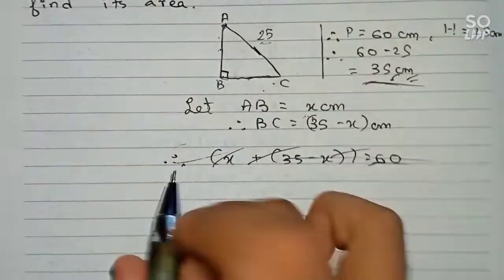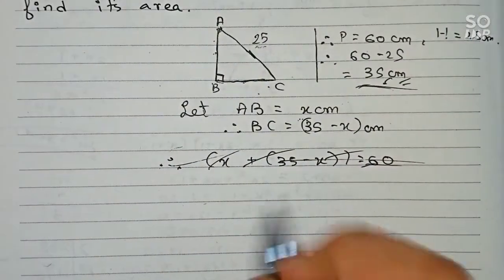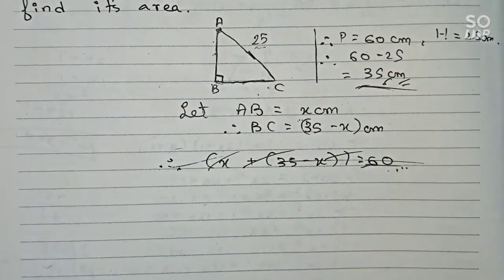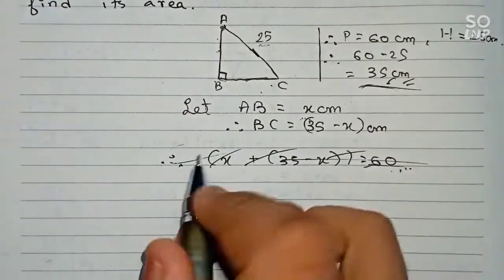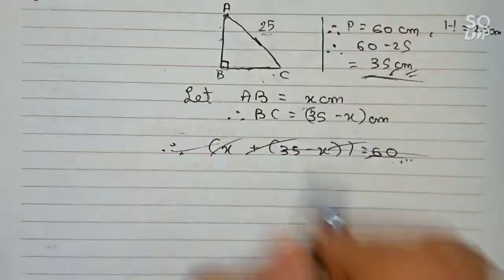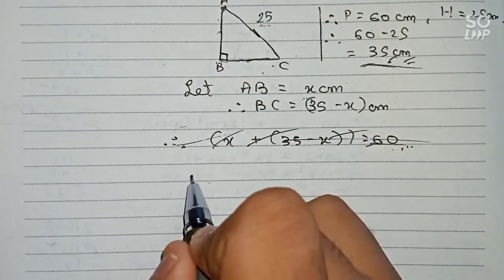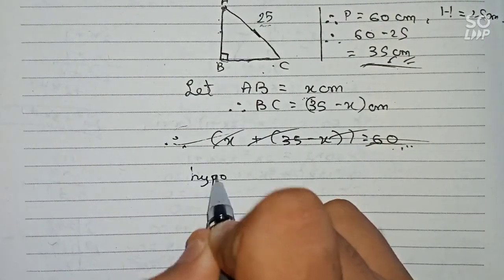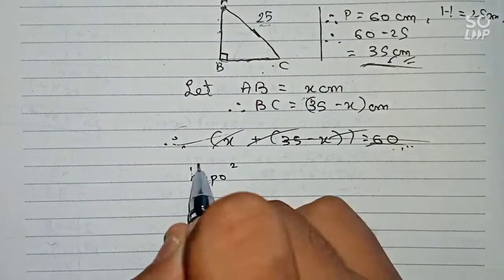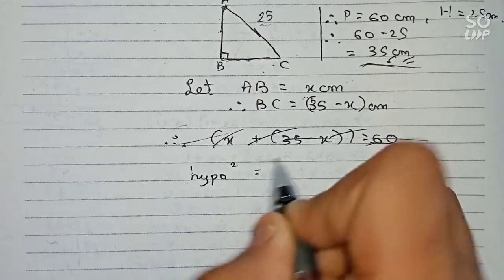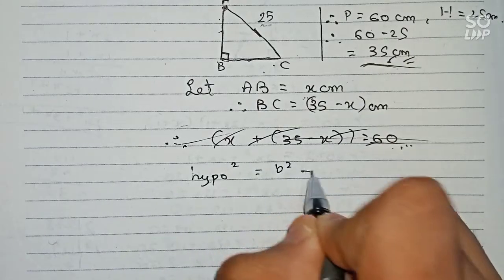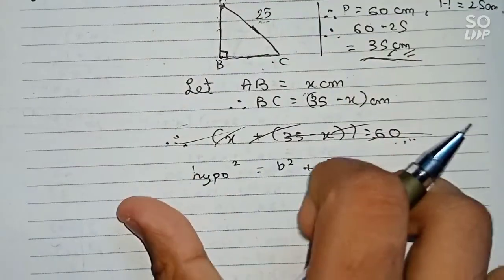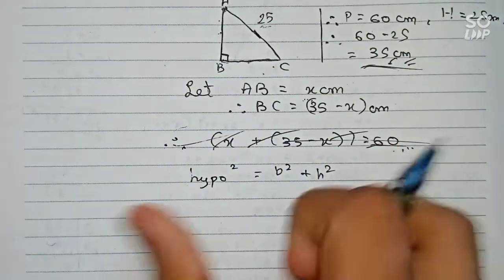It will be easier if we apply the Pythagorean theorem. According to the Pythagorean theorem: hypotenuse squared equals base squared plus height squared.